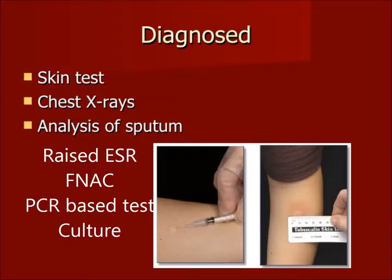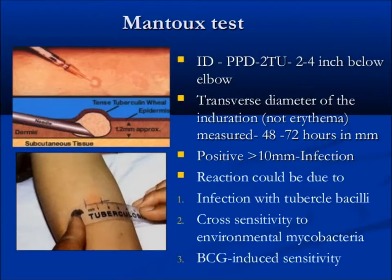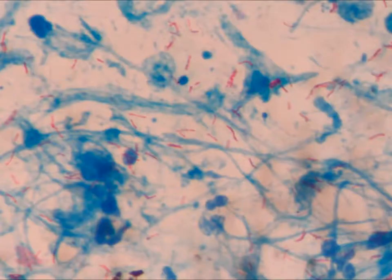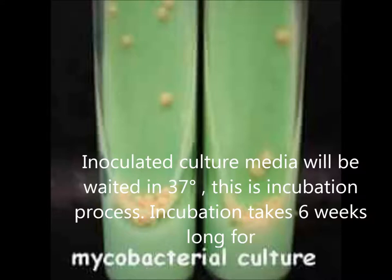The skin test is called the Mantoux test, in which a subcutaneous injection of PPD is injected below the elbow, and induration is measured after 48 to 72 hours. Sputum can be stained with ZN stain and examined under a microscope — this shows pink beaded rods. The patient must bring sputum on three consecutive days. Culture on special media gives creamy white colonies, but it takes a long time — the culture becomes positive after six weeks.